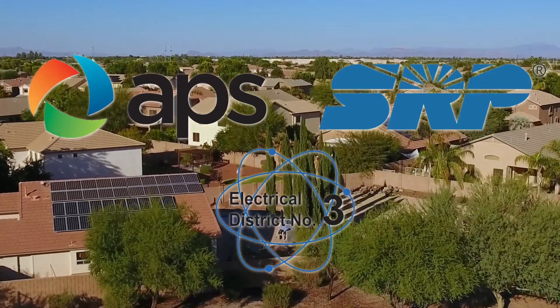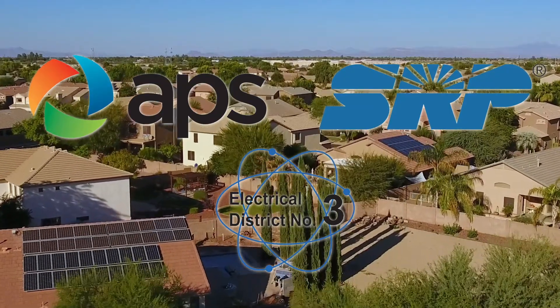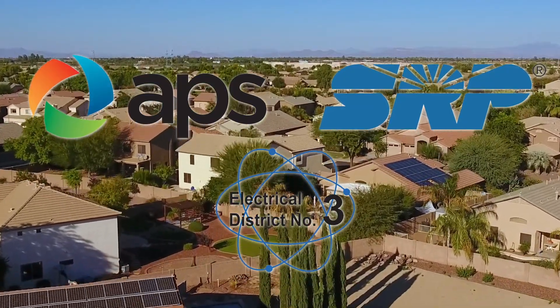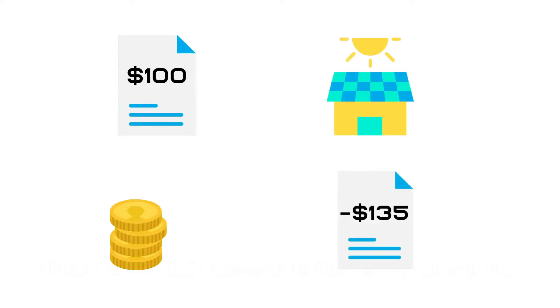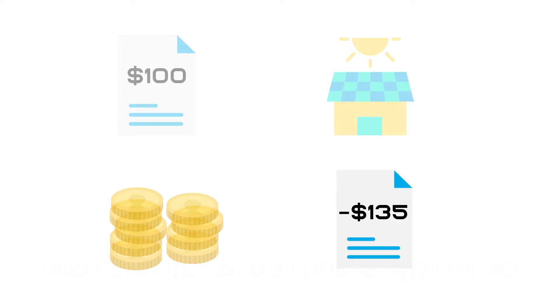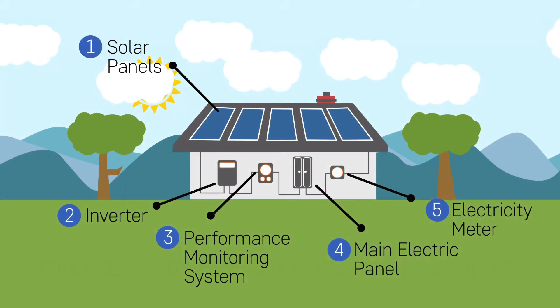They will pay you for that electricity, and that looks like credits on your bill. So if you had a bill that was $100 a month and then you went solar and started generating all these credits, you could end up with a negative bill. I've seen a negative bill of $135 once — it confused the customer — but just understand that, like rollover minutes, if you don't use it, it sits as a credit.